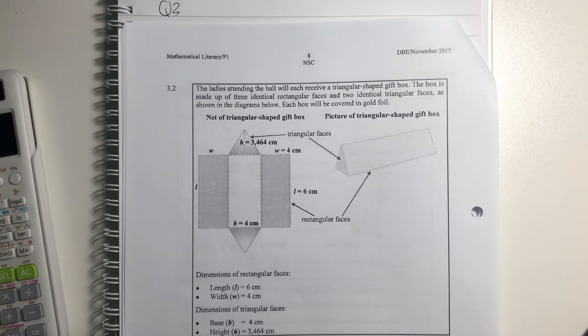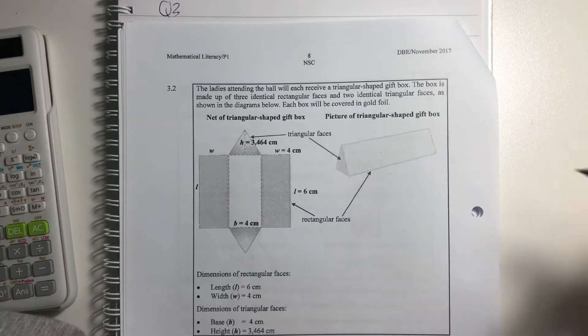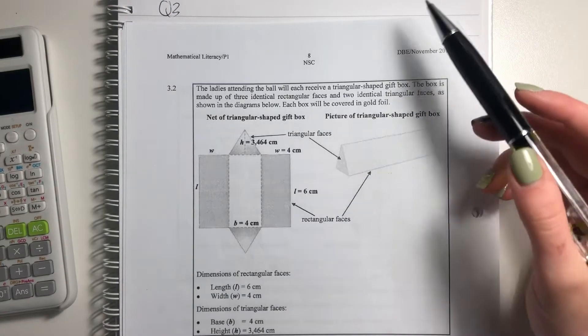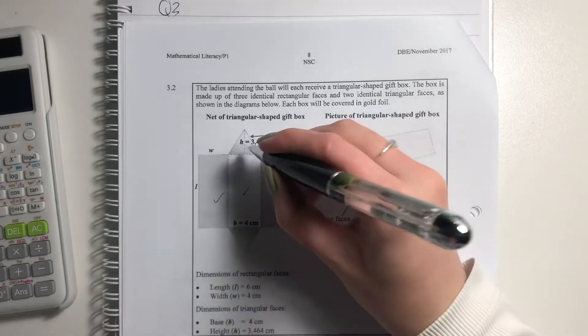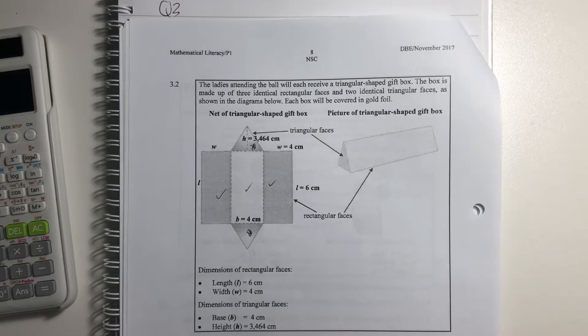Okay, let's look at 3.2. It says the ladies attending the ball will each receive a triangular shaped gift box, so basically like a Toblerone, right? The box is made up of three identical rectangular faces, so one, two, three, and two identical triangular faces, okay, just so that we know what we're looking at.